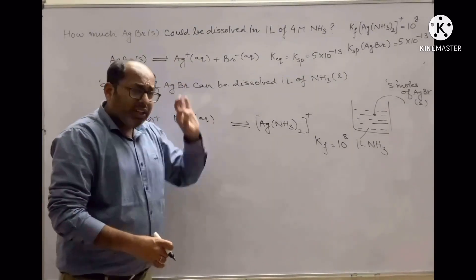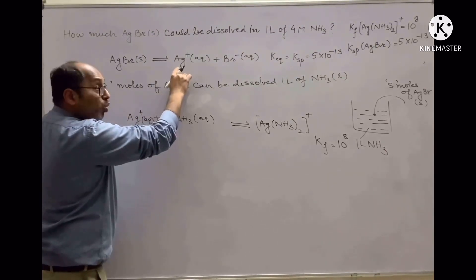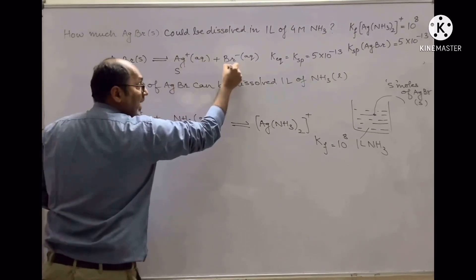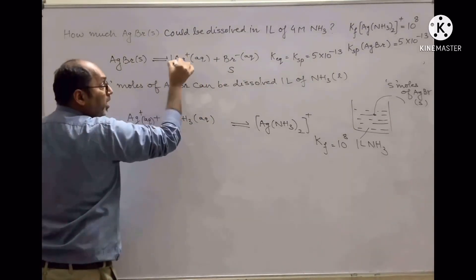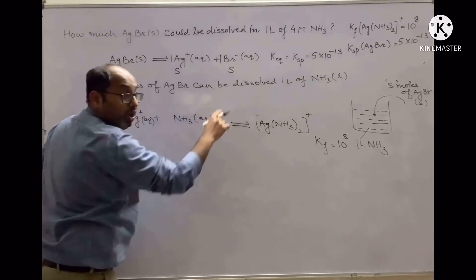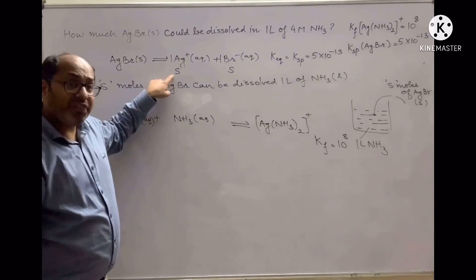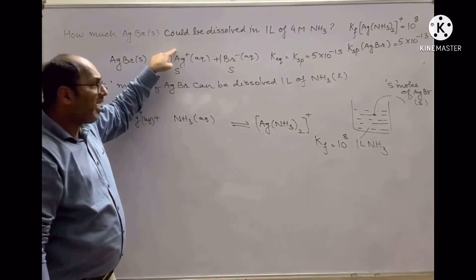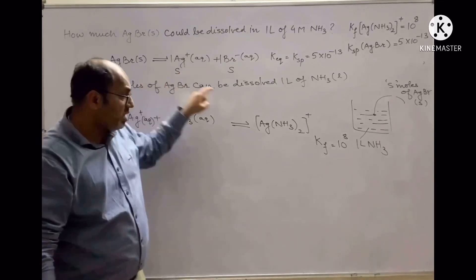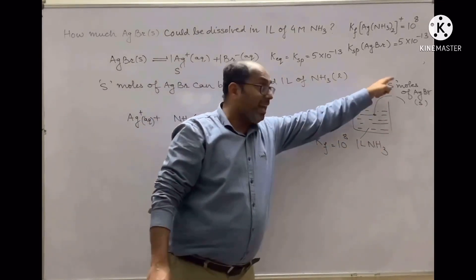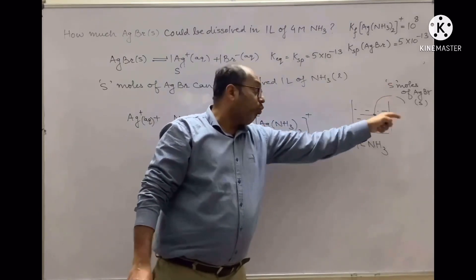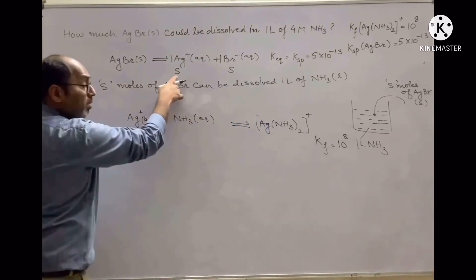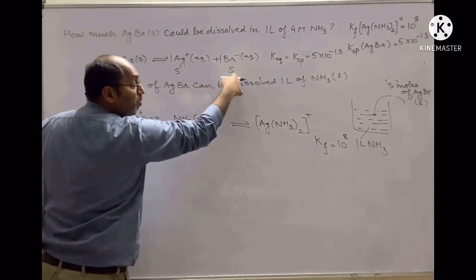The moles of Ag⁺ and Br⁻ generated are s and s, because they are formed in a 1:1 stoichiometric ratio. You get s moles of Ag⁺ and s moles of Br⁻. Since I'm taking one liter solution and adding s moles, s is the molarity of silver positive ions and also the molarity of bromide ions.